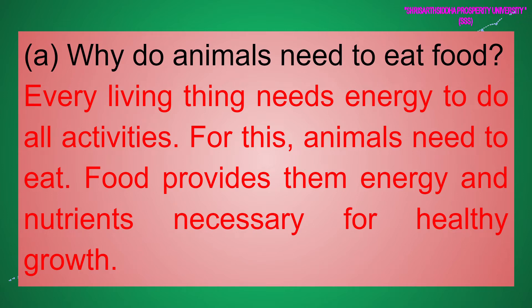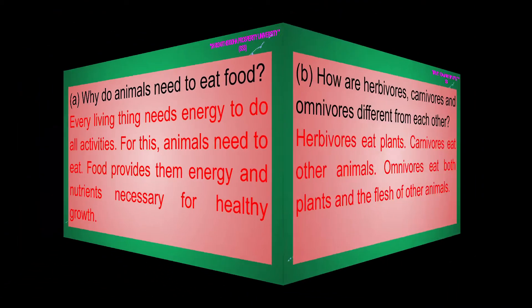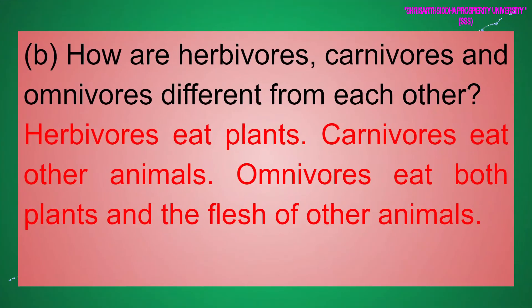(b) How are herbivores, carnivores, and omnivores different from each other? Answer: Herbivores eat plants. Carnivores eat other animals. Omnivores eat both plants and the flesh of other animals.